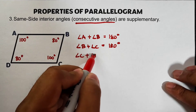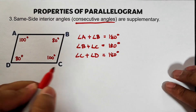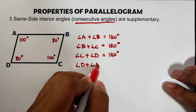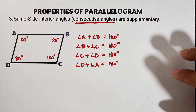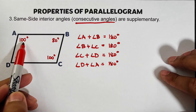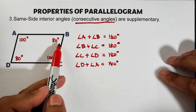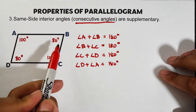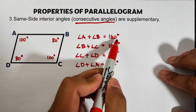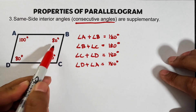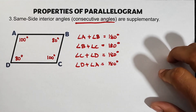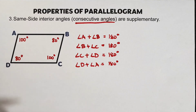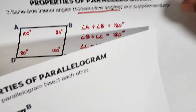Angle C plus angle D equals 180 degrees. Using the previous example from property two: angle A is 100 degrees and angle B is 80 degrees. Since they are consecutive, 100 plus 80 equals 180 degrees. Similarly, 80 plus 100 is 180, 100 plus 80 is 180, and 80 plus 100 is 180. Let's move on to the fourth property.